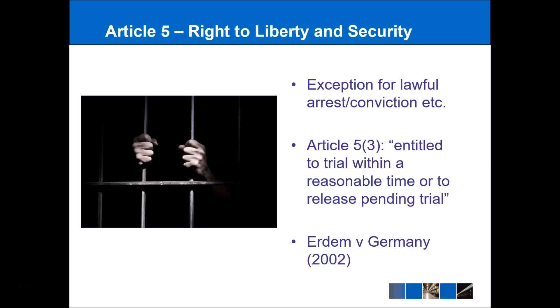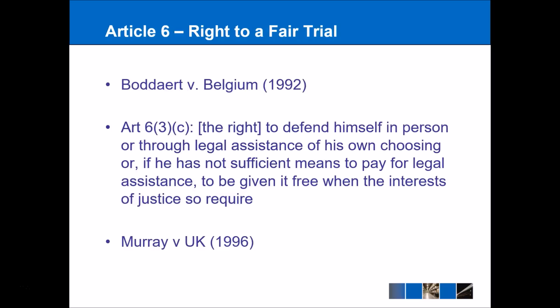Article 5 is the right to liberty and security — a limited right as discussed earlier. Article 5(3) provides that you're entitled to a trial within a reasonable time or release pending trial. Erden v Germany is a case that discusses this further — the idea being that you can't be arrested and then left in a cell without actually having a trial to prove that you are guilty. Article 6 — the right to a fair trial — carries on this theme. Article 6(3)(c) raises issues surrounding legal aid, and many have argued recently that because of the government's legal aid cuts, it constitutes an abuse of Article 6 under the convention.